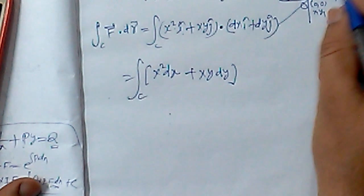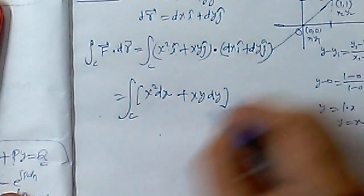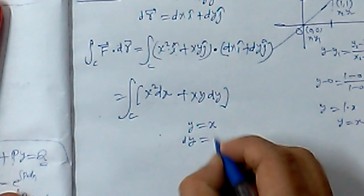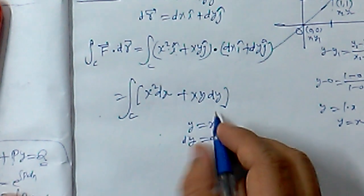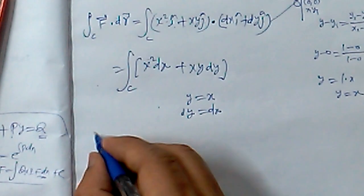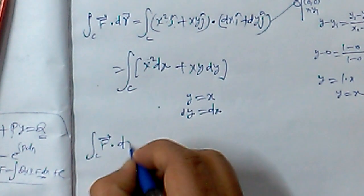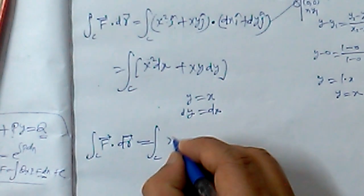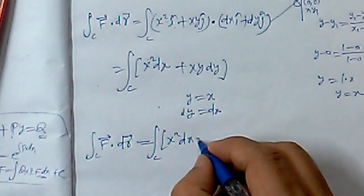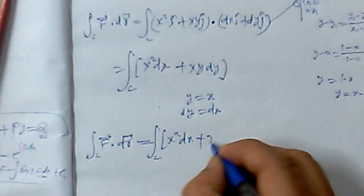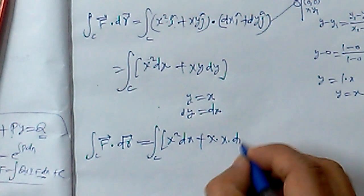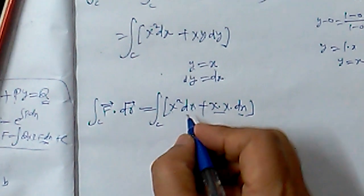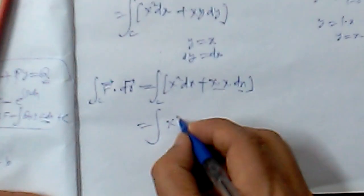The line integration is along the curve we already found. According to this line equation y equals x, when we differentiate y, dy equals dx. So the complete integral in terms of x: the line integration F dot dr converts to x in x square dx plus x times x times dx.